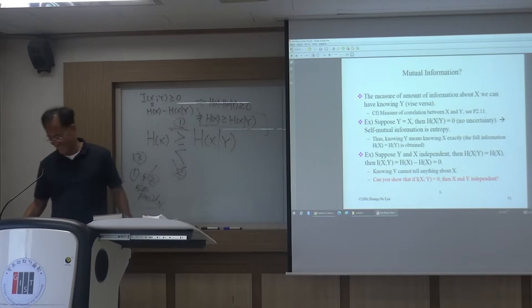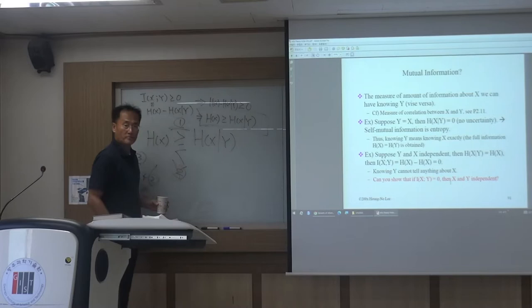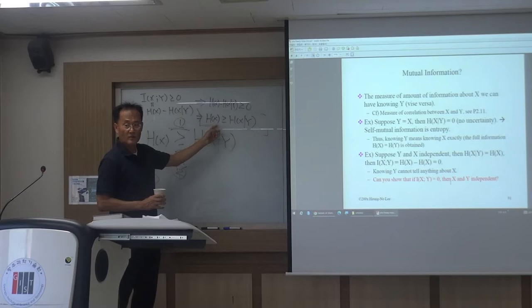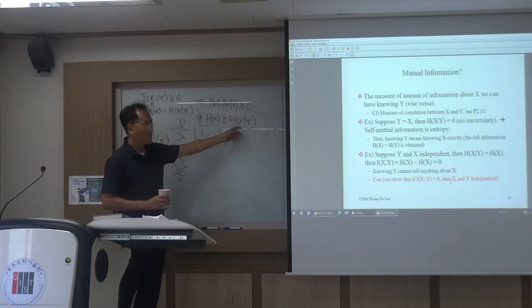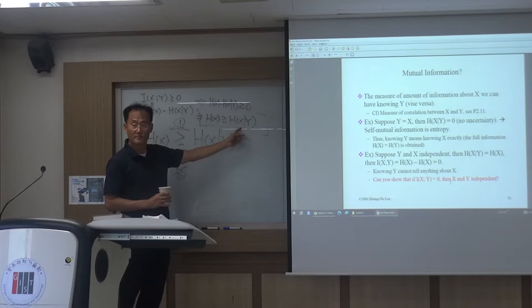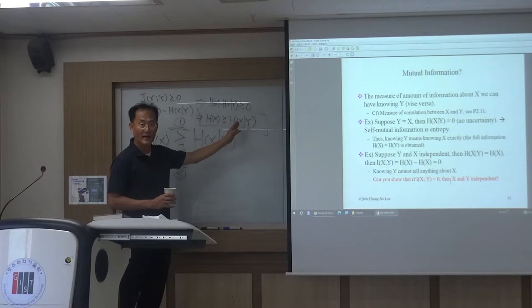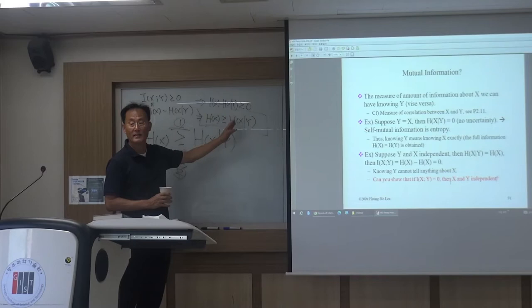Okay, just checking if you are following. So from this, what can you tell about entropy? If you are measuring the uncertainty of a random variable and you have a conditioning, it reduces entropy. If this measure is exactly equal to 0, they are independent — H(X|Y) equals H(X). If X and Y are independent, knowing Y cannot tell anything about X, so there is no reduction in uncertainty of X.